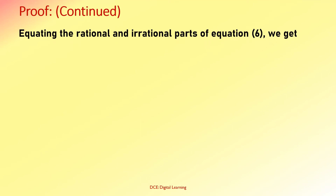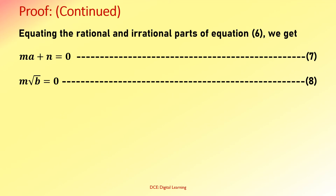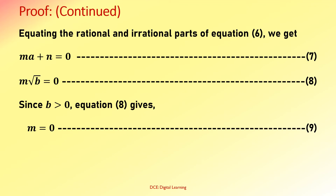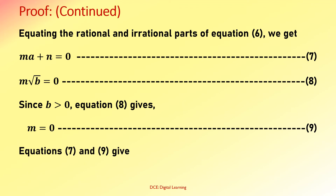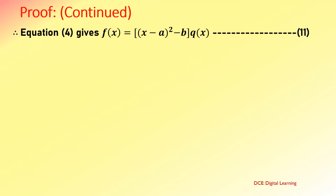Equating the rational and irrational parts of equation 6, we get MA+N = 0, equation 7, and M√B = 0, equation 8. Since B is not zero, M = 0, equation 9. Equations 7 and 9 give N = 0, equation 10. Therefore equation 4 gives f(x) = ((x−A)²−B)·Q(x), equation 11.